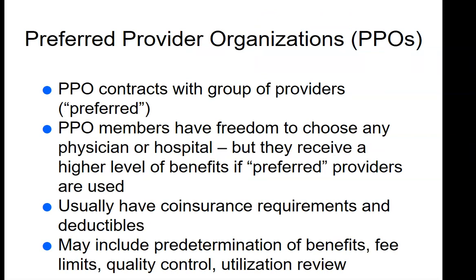The Preferred Provider Organizations (PPOs): occasionally the PPO pays 100% of the cost of care, but most do not. As with major medical policies, co-insurance requires patients to pay 20–25% of the allowable amount up to a certain point, and then the PPO pays 80–100% of the balance. The PPO contracts with groups of providers known as preferred providers; PPO members have freedom to choose any physician or hospital but receive a higher level of benefits when preferred providers are used. They usually have co-insurance requirements and deductibles, and may include predetermination of benefits, fee limits, quality control, and utilization review.